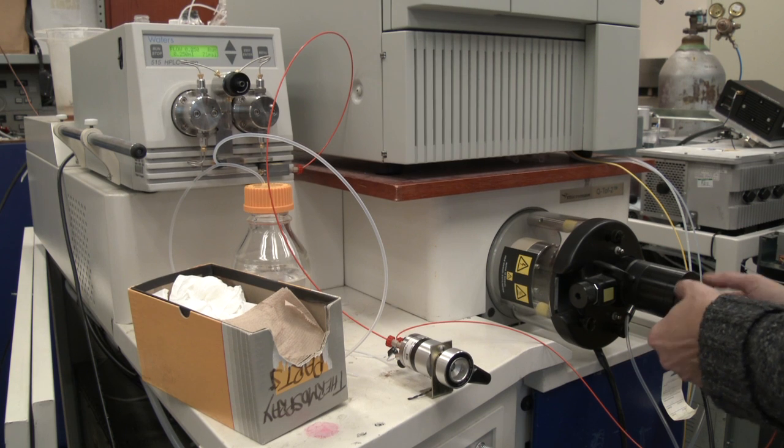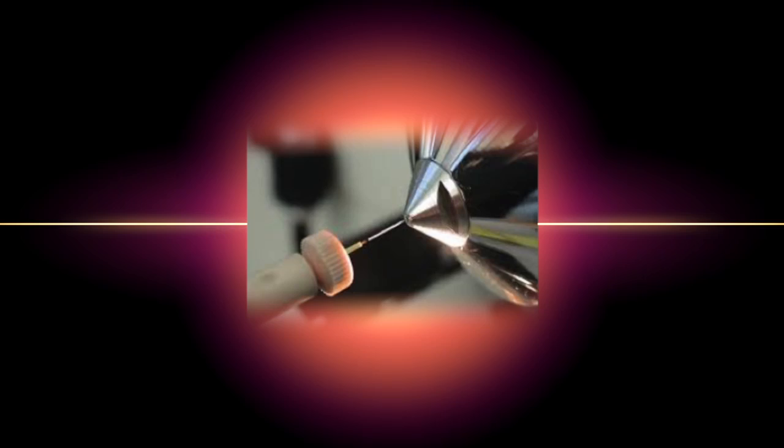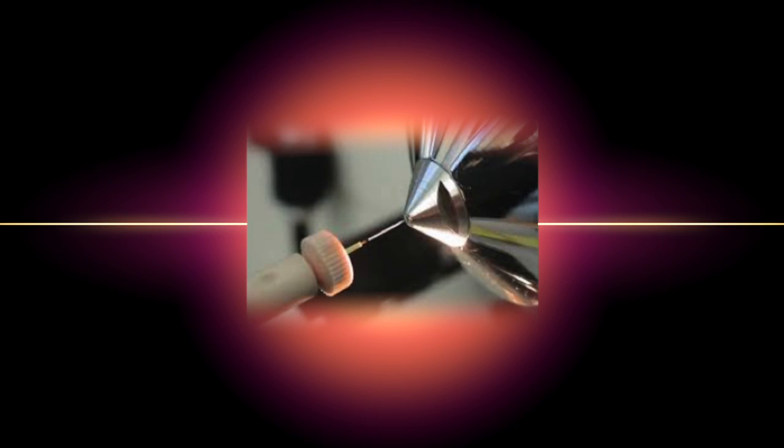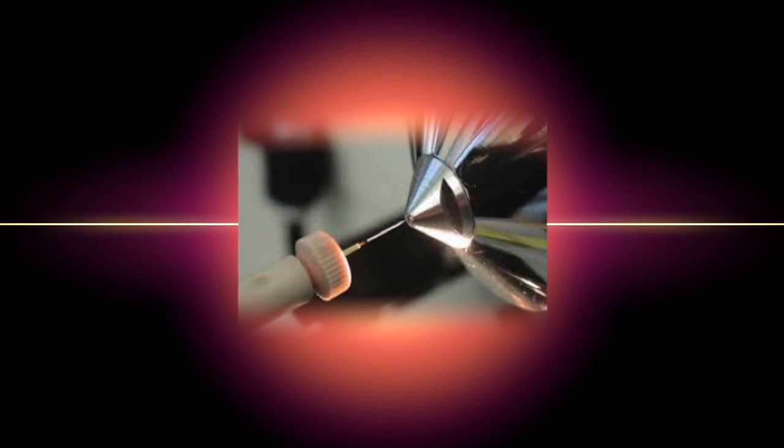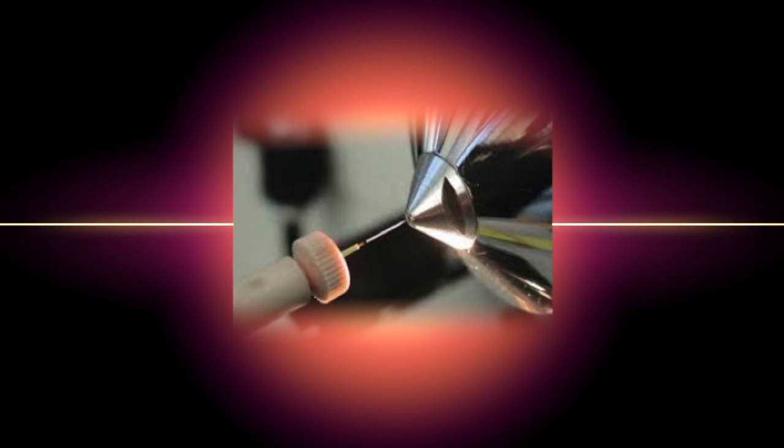The electrospray capillary is a stainless steel narrow bore tube through which solvent and analyte are passed. An additional tube around the outside carries nitrogen gas (nebulizer gas) which creates the spray you see here.